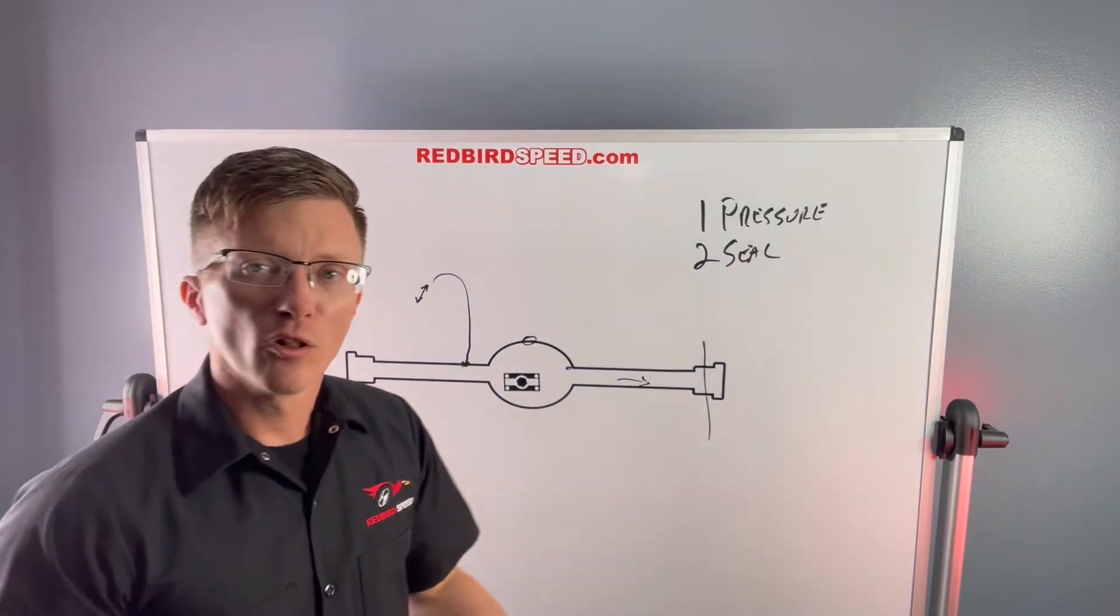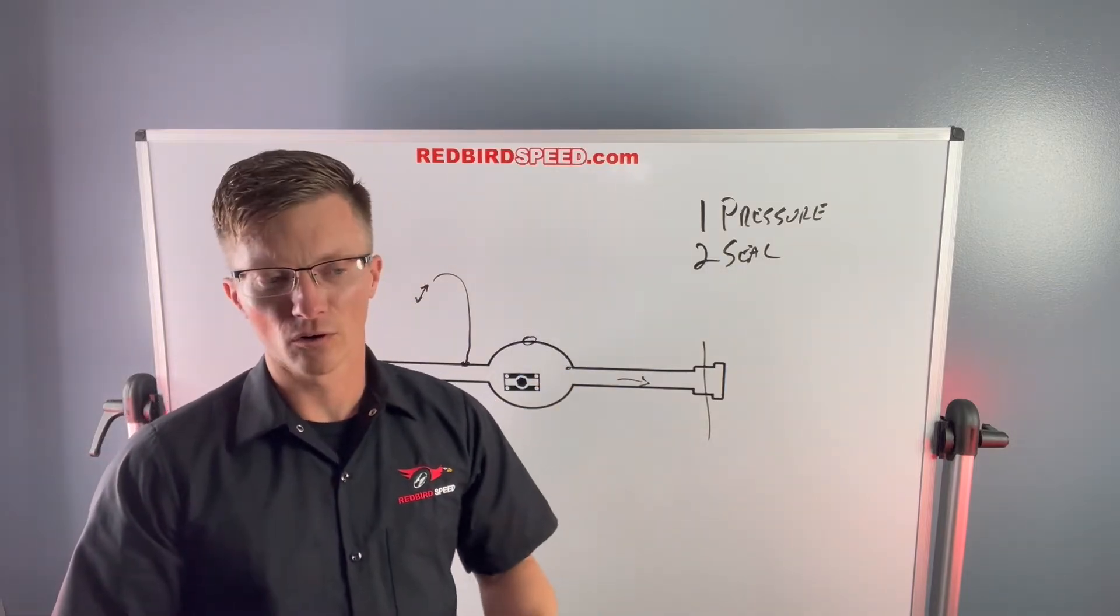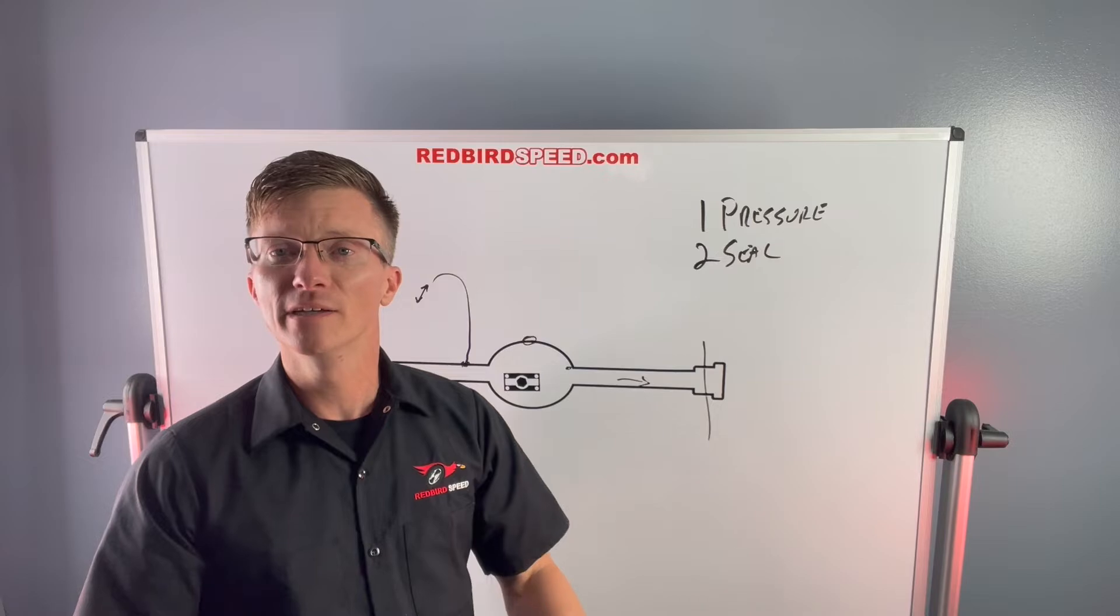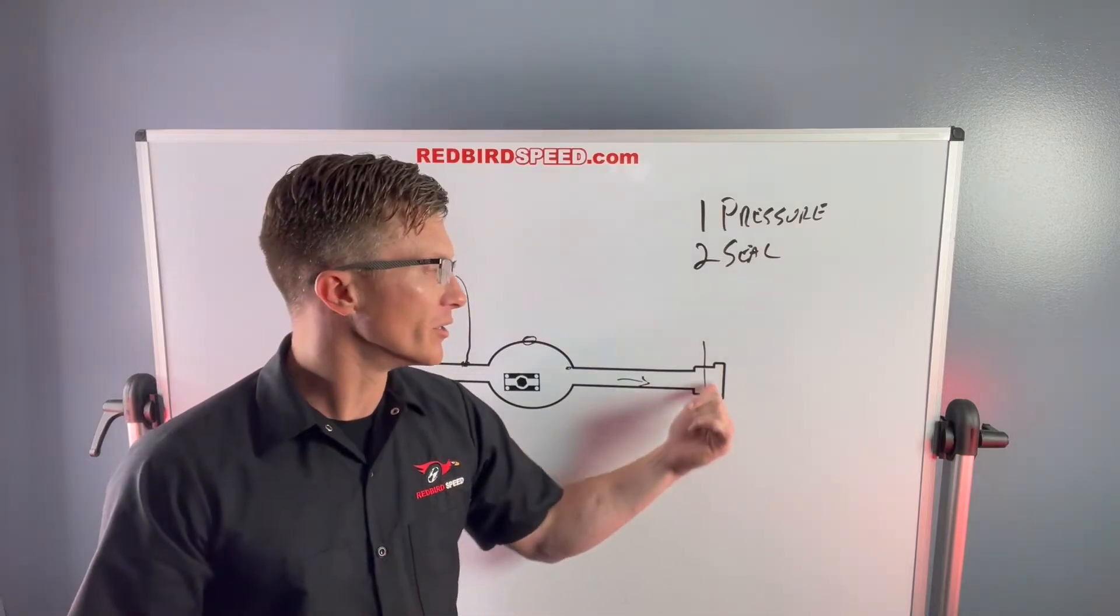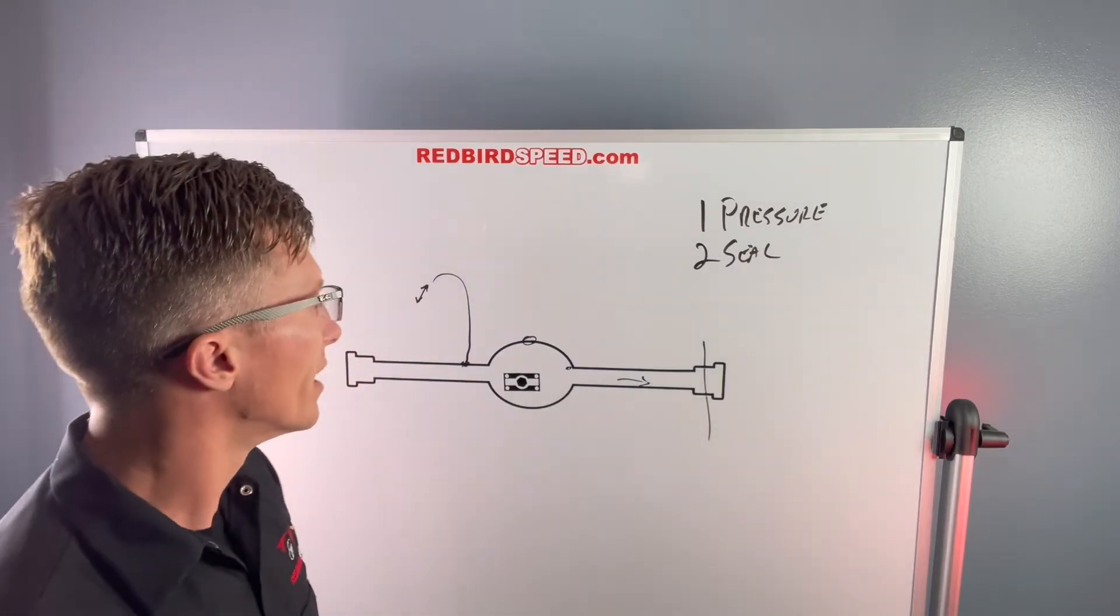So if that lip seal is pinched, like if you don't put that seal on right and you don't press that bearing on right and it's crooked or something, you could pinch that seal and not get a good seal there and have leaking right off the bat when you install the axle.